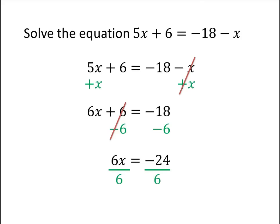And on the left-hand side, 6 divided by 6 is 1, so those 6's cancel. And on the right-hand side, negative 24 divided by 6 is negative 4. So our answer is x equals negative 4.